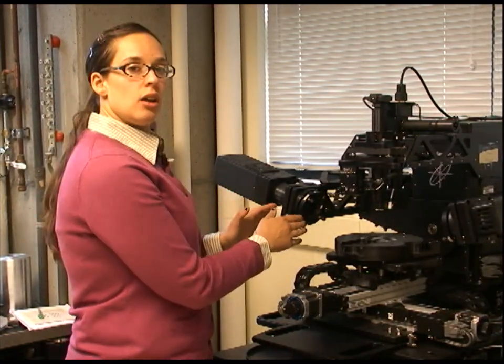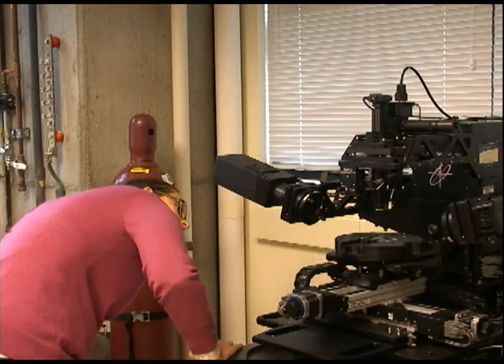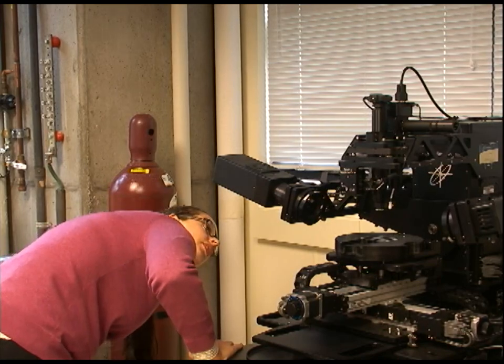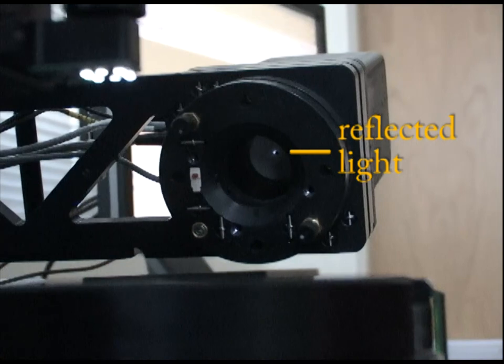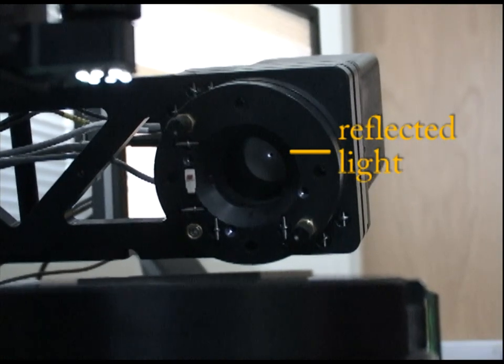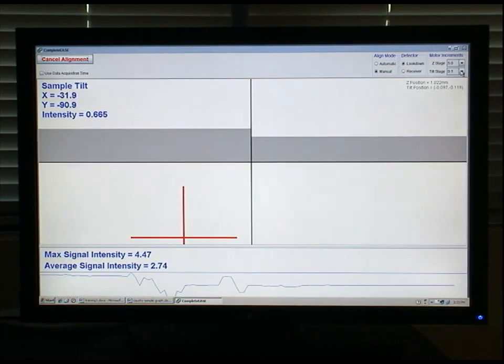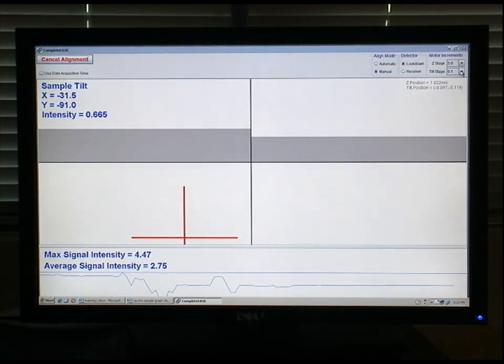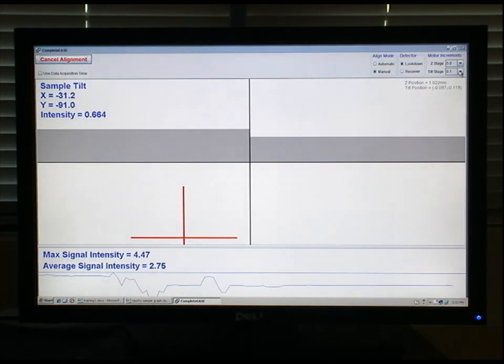Once we have our sample prepared and mounted, the first thing we should do is align our sample. We want to make sure that our incident light is reflecting off the sample into the detector. I'm going to look inside the detector where there's a small ring in which the light is being fed into. When doing the sample alignment, we're trying to move the collected light into the aperture so we have adequate amount of light being collected that's reflected off the surface of the sample.